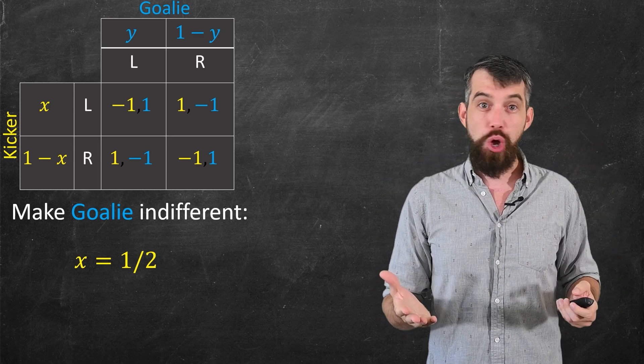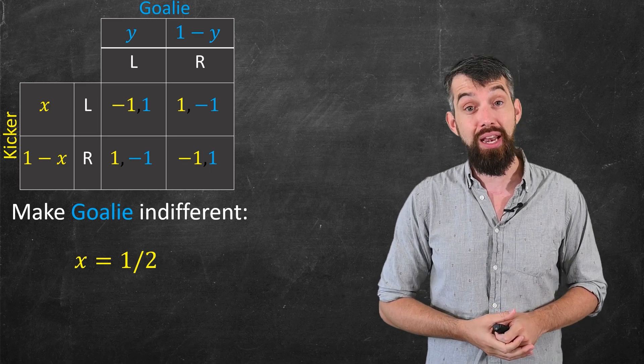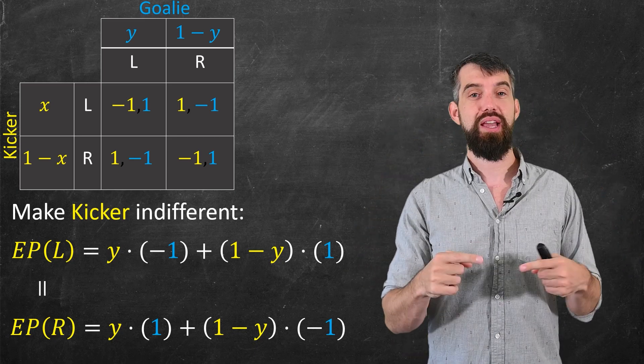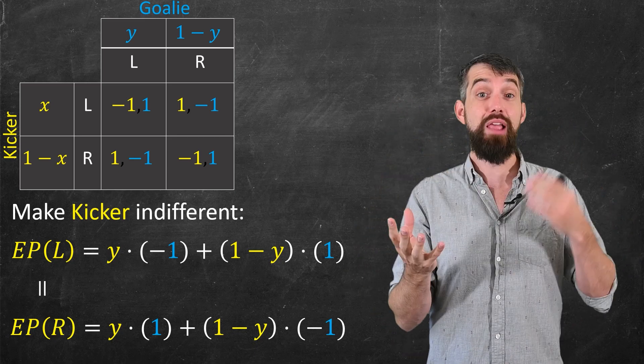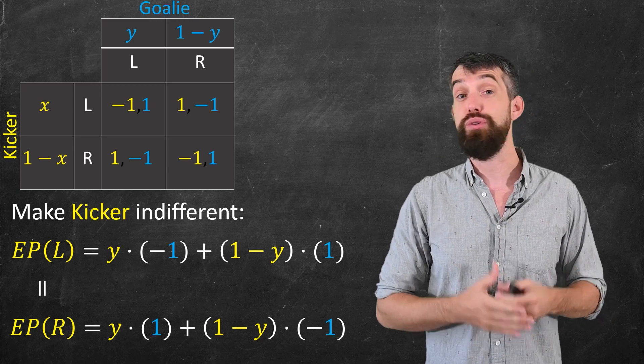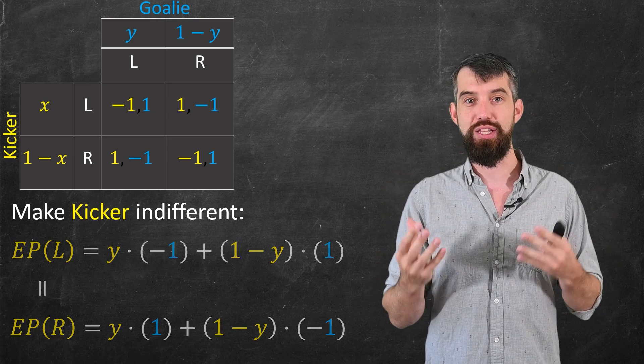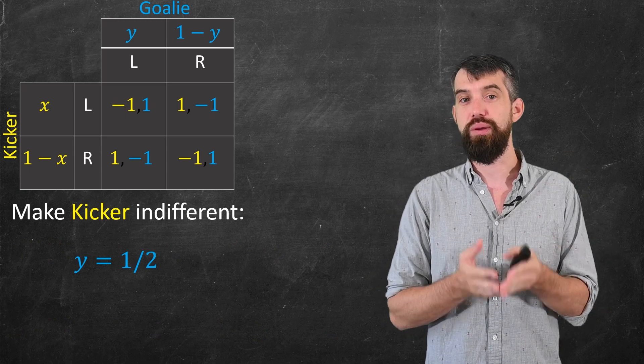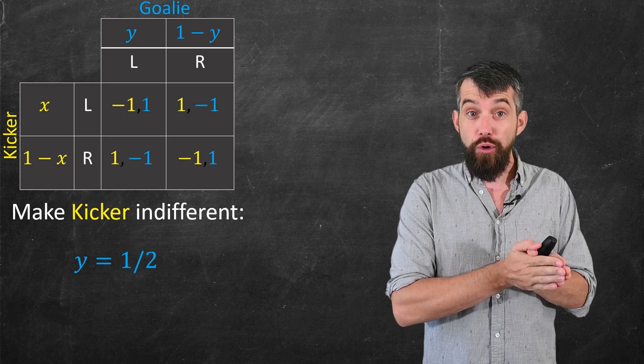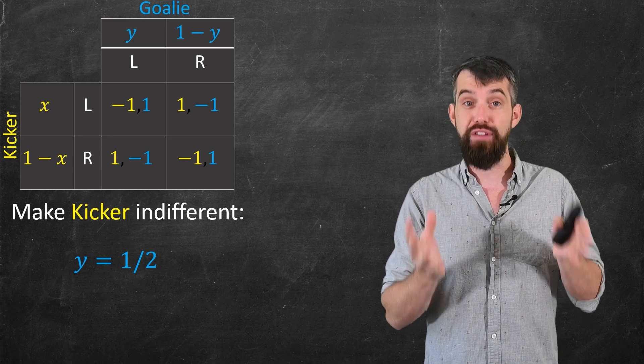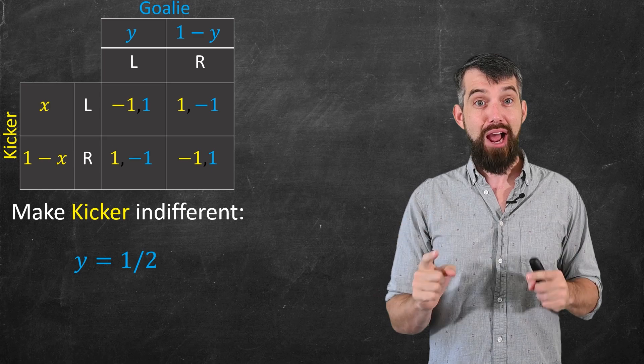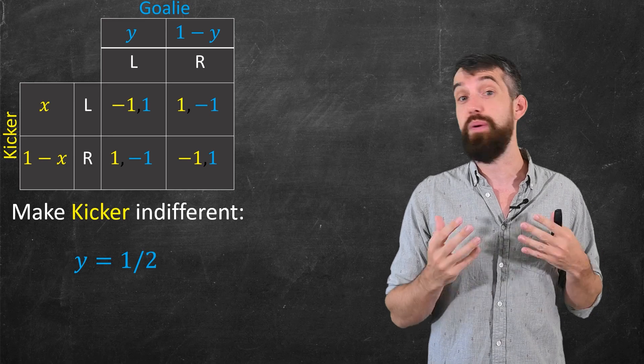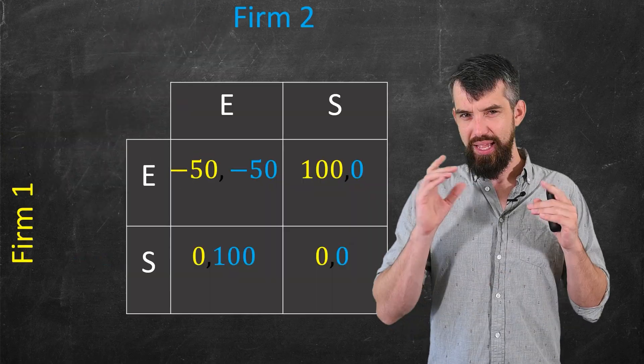You can do the exact same computation indeed. I would encourage you to pause the video and try to do it again. This is for the goalie trying to make the kicker indifferent. To make the kicker indifferent, the expectation on the left and the right have to be the same. Do the exact same type of computation. You get that y is one half as well. So we have recaptured our intuitive answer that the Nash equilibrium for this game is when both players are going left and right 50-50. Okay, so now that we've done this for the football example, let's see a slightly more sophisticated example that comes to us from economics.